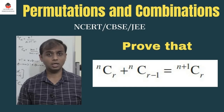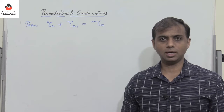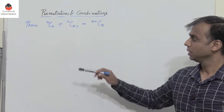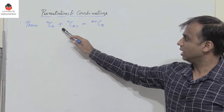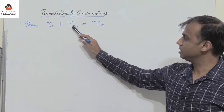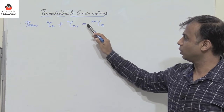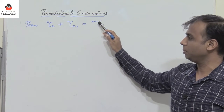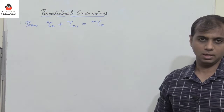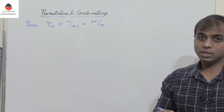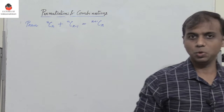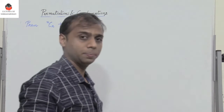In the chapter permutations and combinations, there is an important relation: NCR plus NC(R-1) equals N+1CR. Let's see how we can prove this relation.